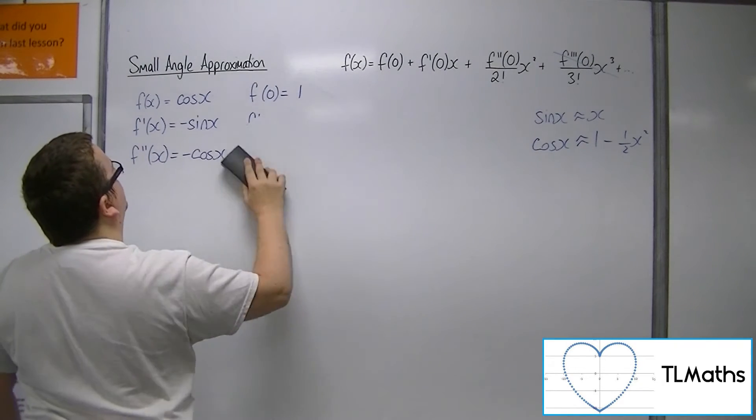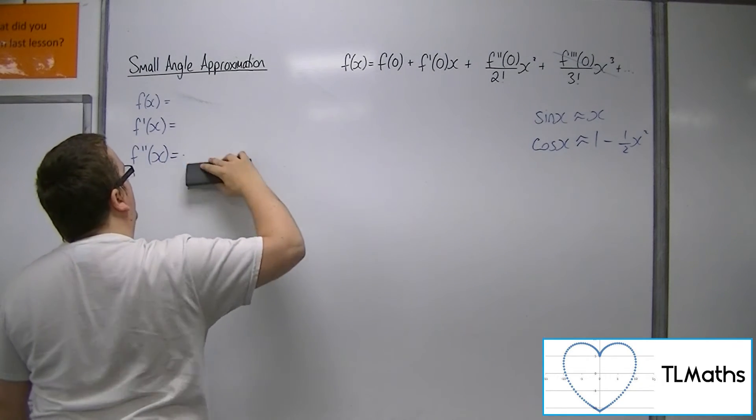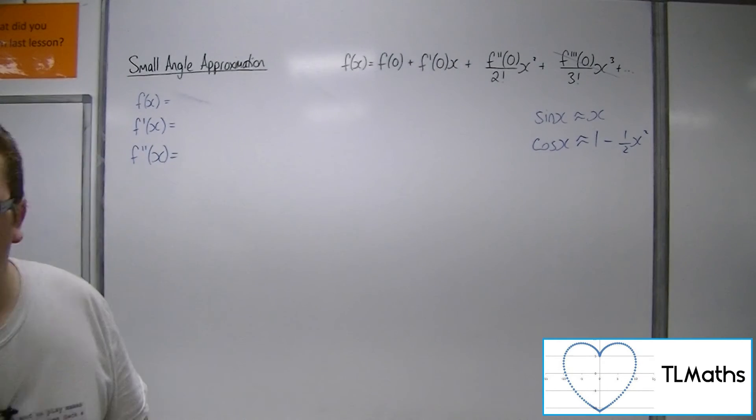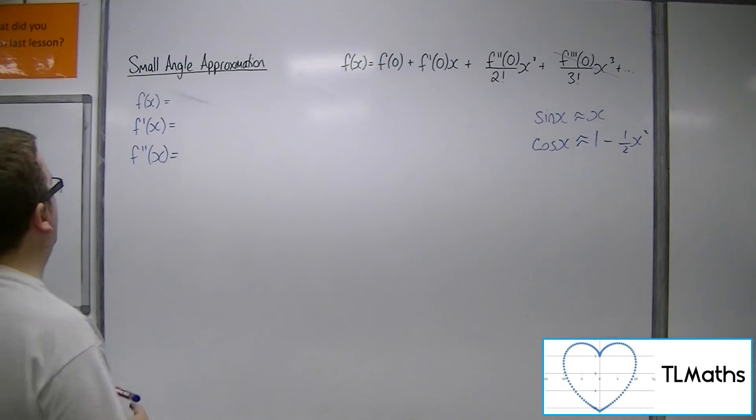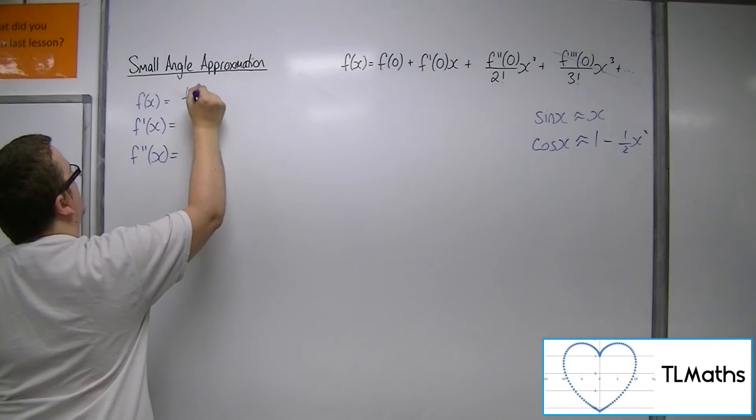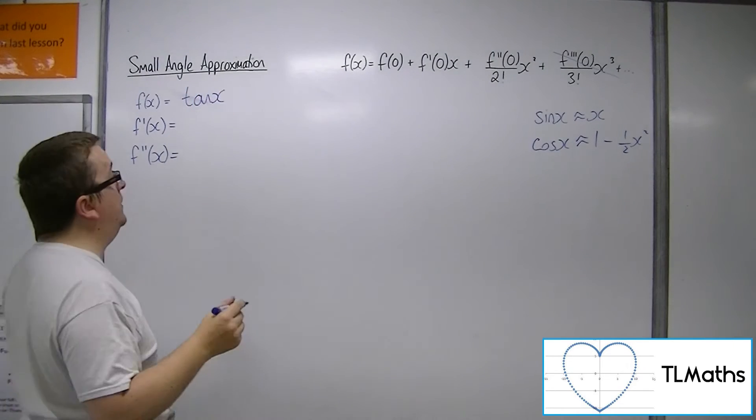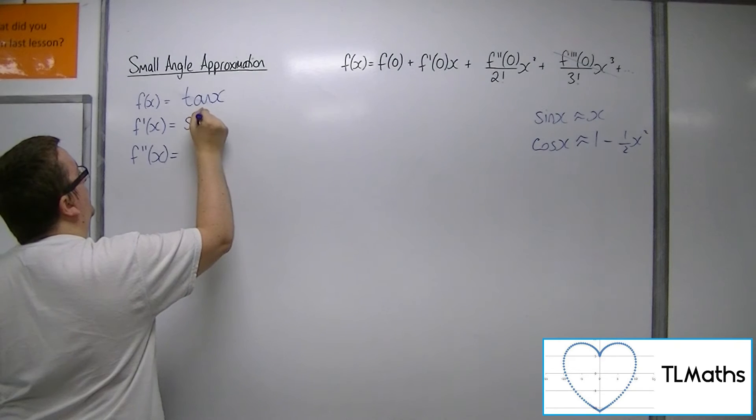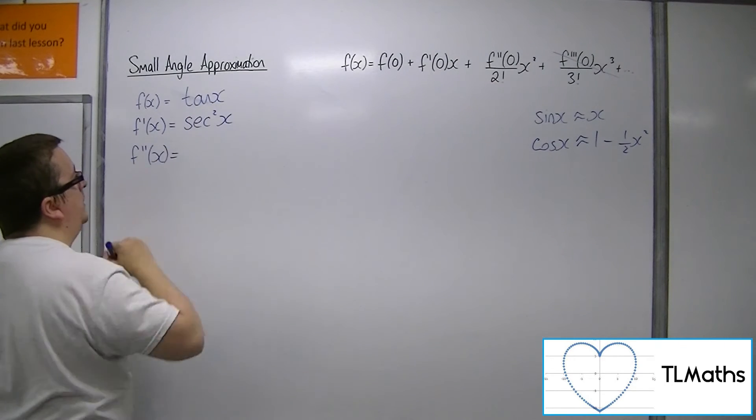Finally, we have tan. Now, tan is always a little bit more difficult differentiating. So, tan x, we should know differentiates to sec squared x. But now we need to differentiate sec squared.